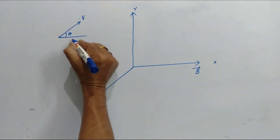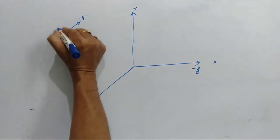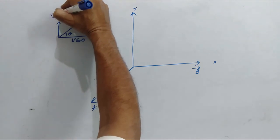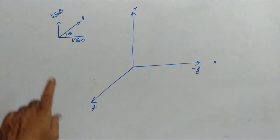Then it will have two components. One component along the magnetic field, the other component perpendicular to the magnetic field.